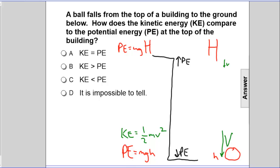That's interesting. Where the PE is large, the KE is small. And where the PE is small, the KE is large. What you lose in one form is what you gain in another.